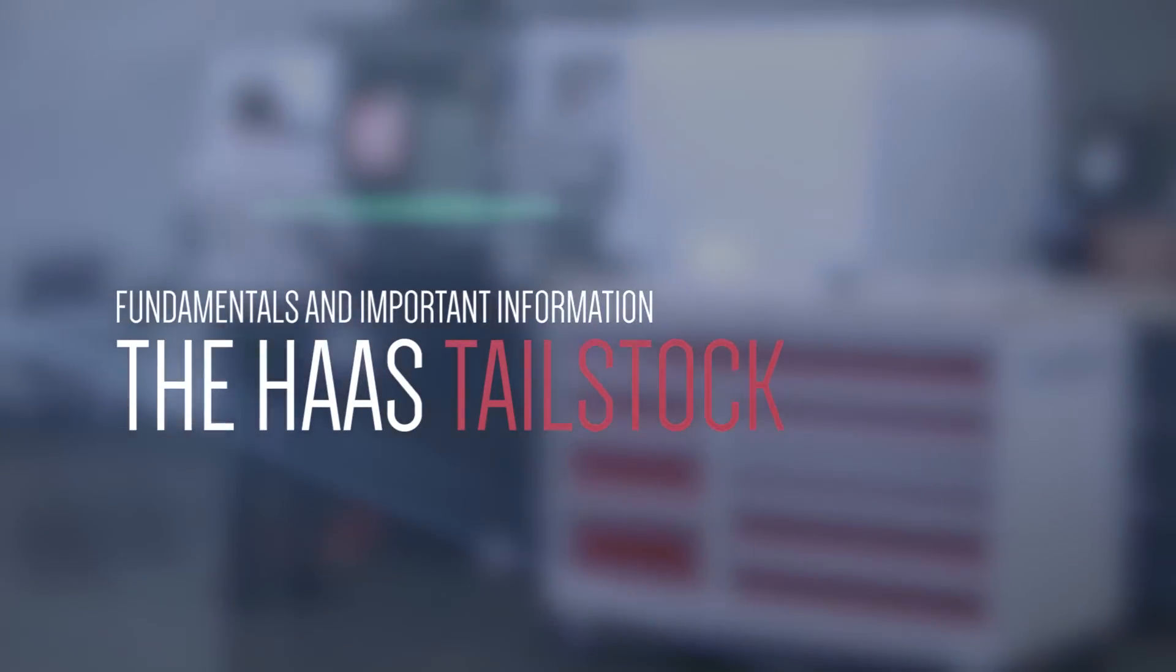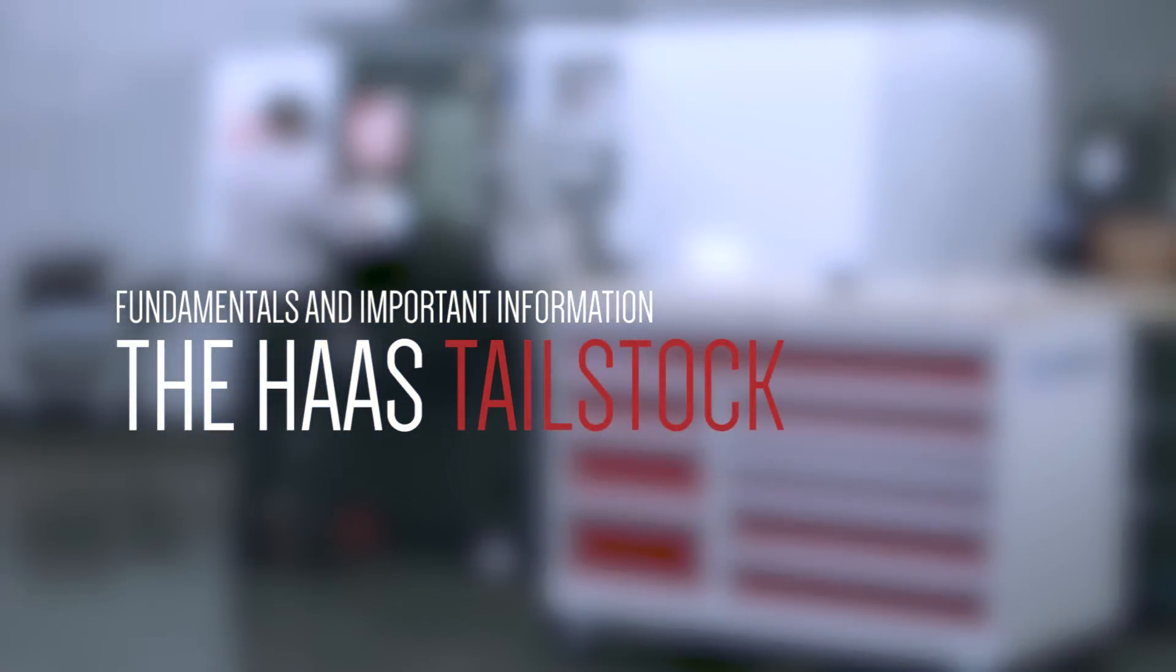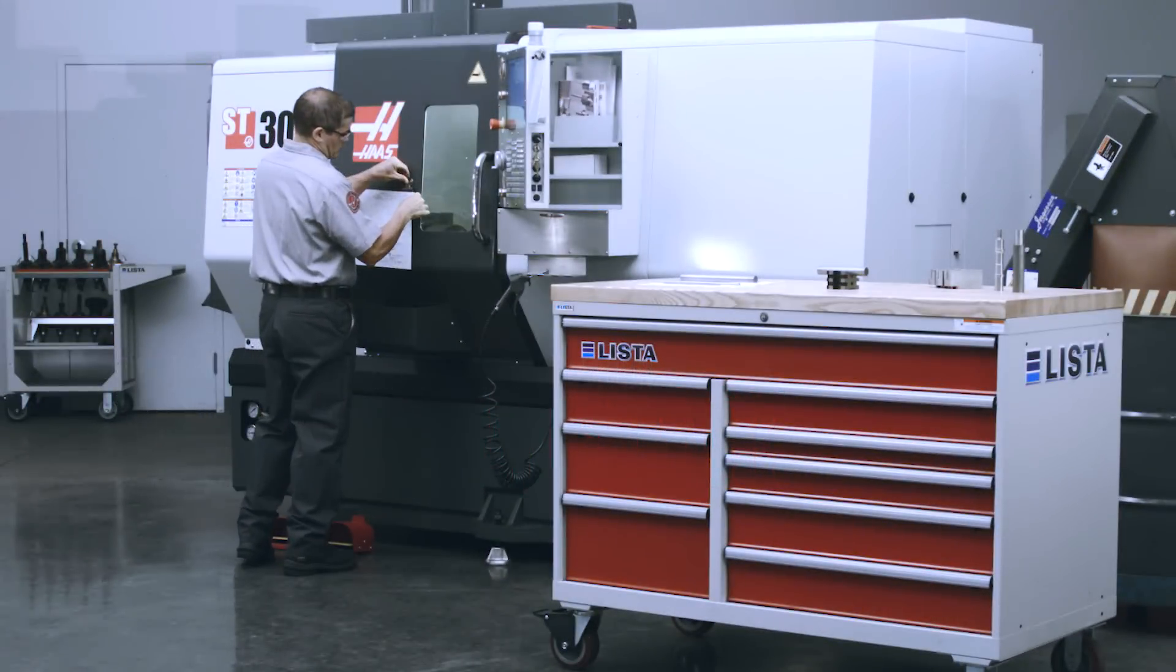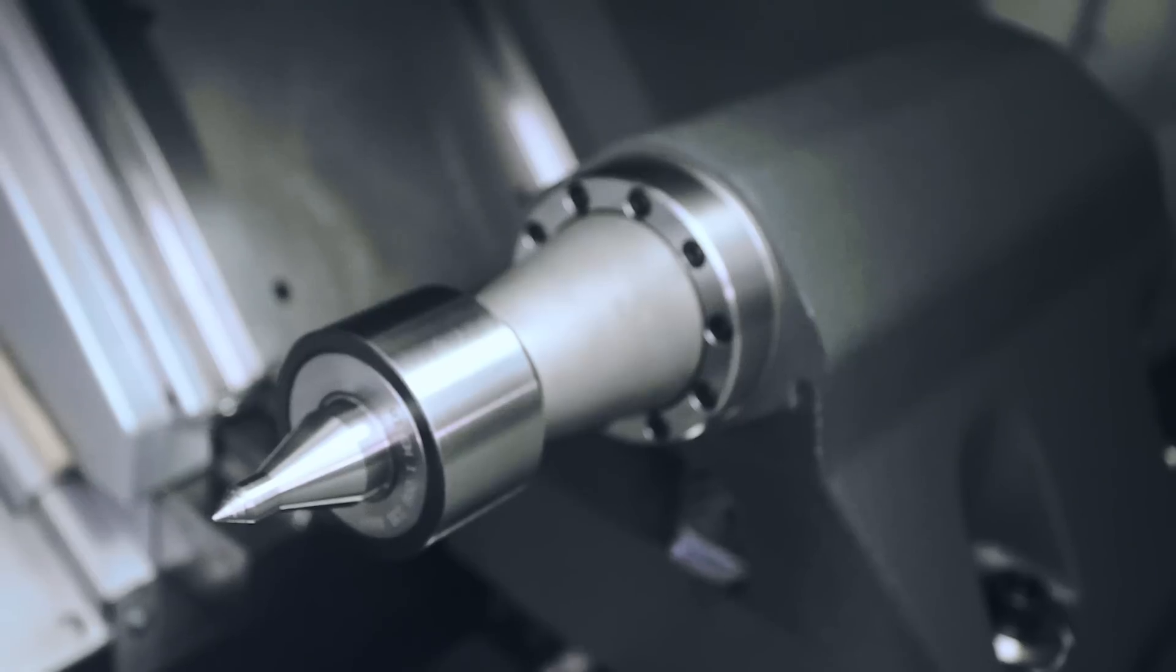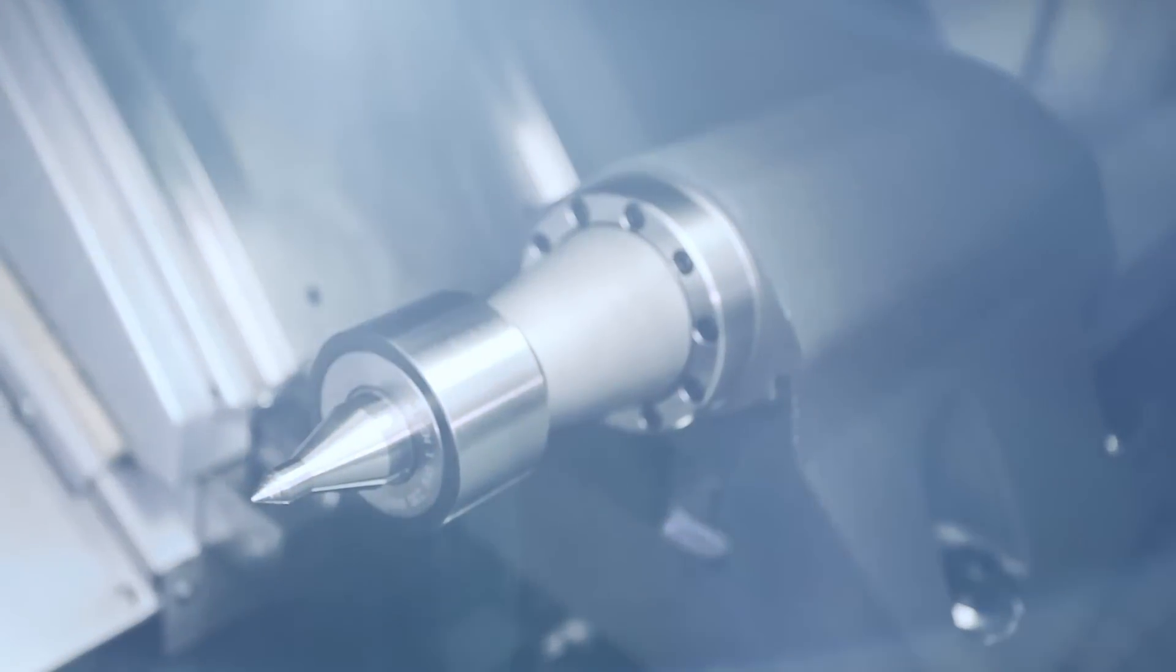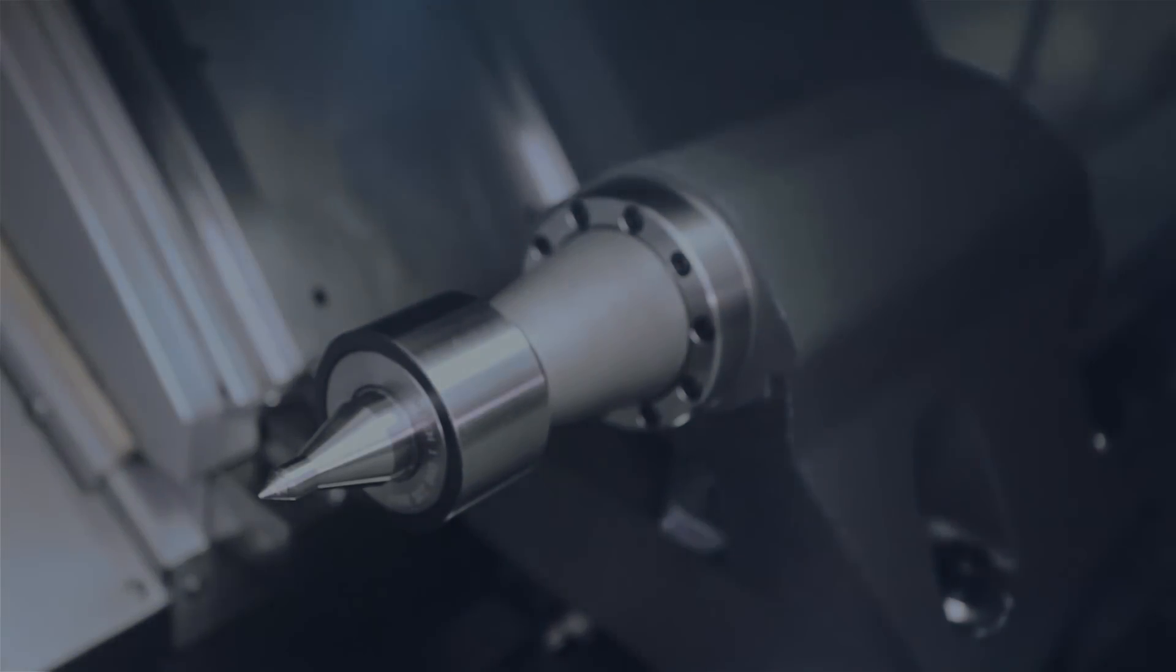Today, we'll discuss fundamentals and important information for using the tailstock on your CNC turning center. The tailstock option, available on all Haas lathes, adds versatility to the turning operations you can perform. But what do you need a tailstock for?